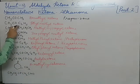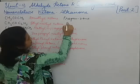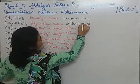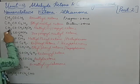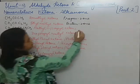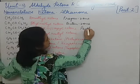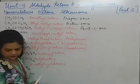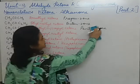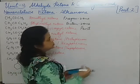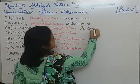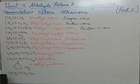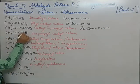Here it is 4 carbons, so it will be butan-2-one. Now here: 1, 2, 3, 4, 5 — so pent. We also need to write the primary suffix, which students often miss. So the full name is pentan-2-one.